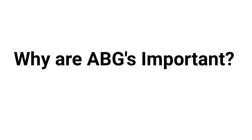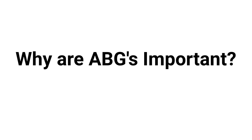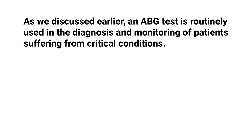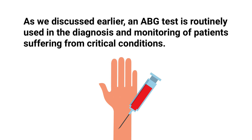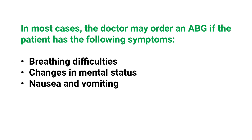Why are ABGs important? An ABG test is routinely used in the diagnosis and monitoring of patients suffering from critical conditions. Because this test provides a precise measurement of the levels of oxygen and carbon dioxide in your body, it can help the doctor determine the patient's lung and kidney function. In most cases the doctor may order an ABG if the patient has the following symptoms: breathing difficulties, changes in mental status, and nausea and vomiting, among others.